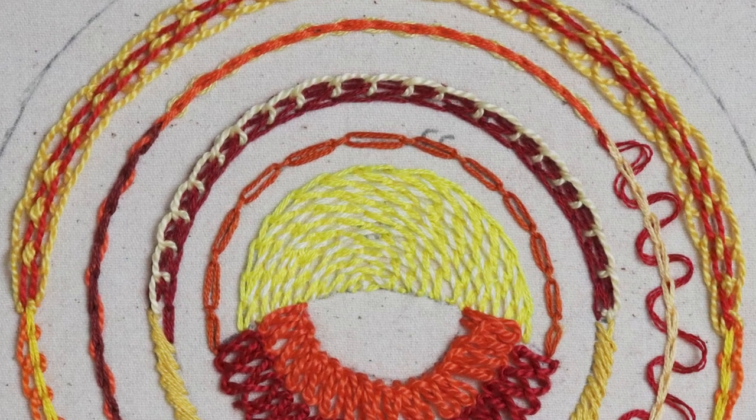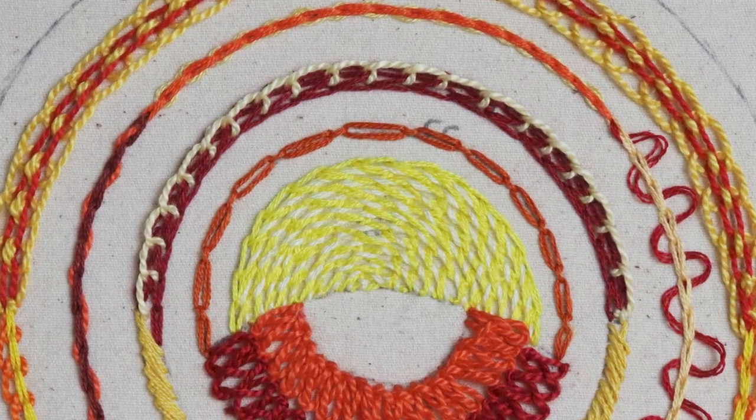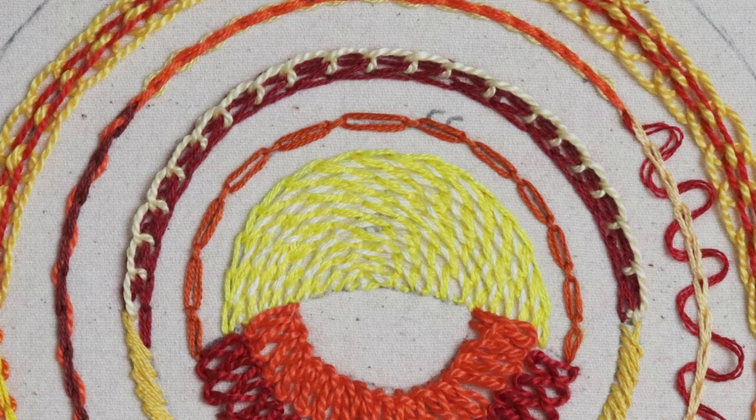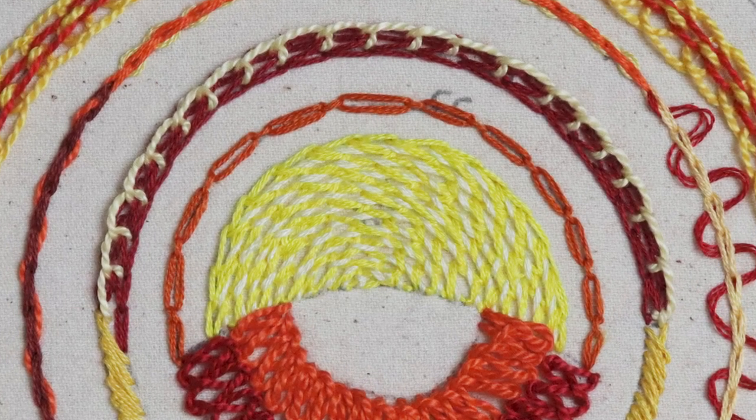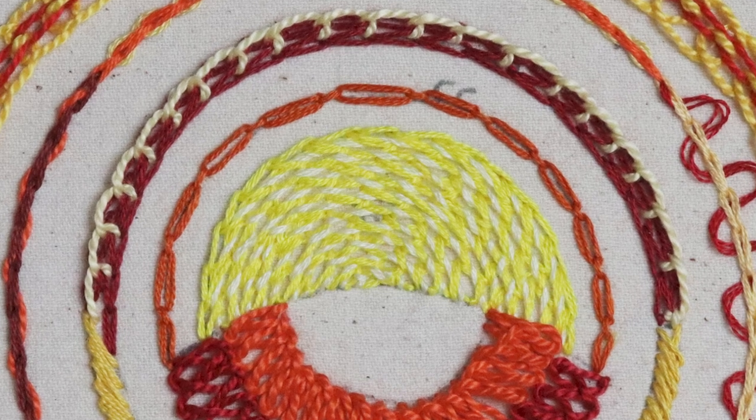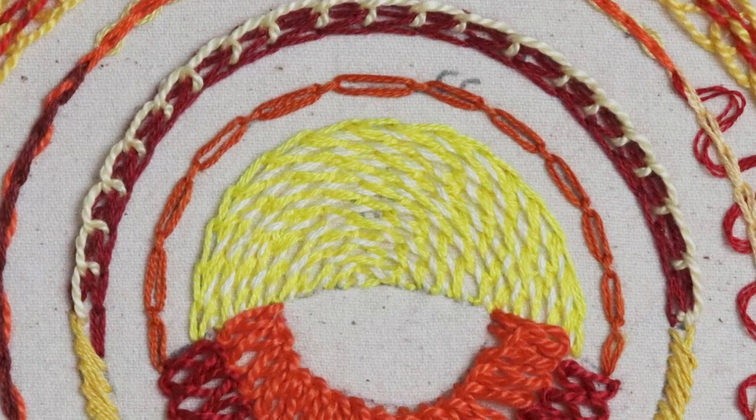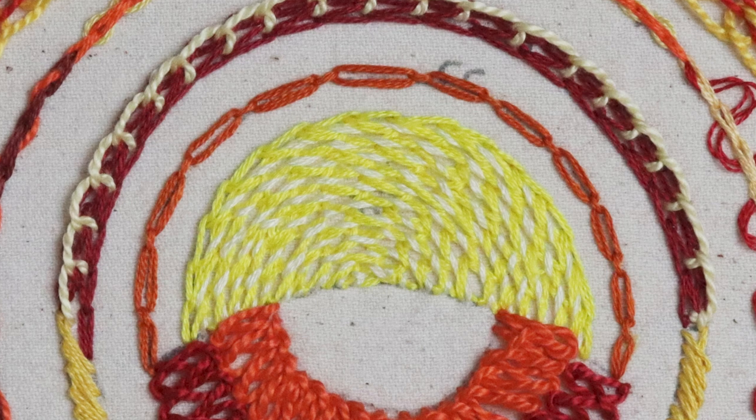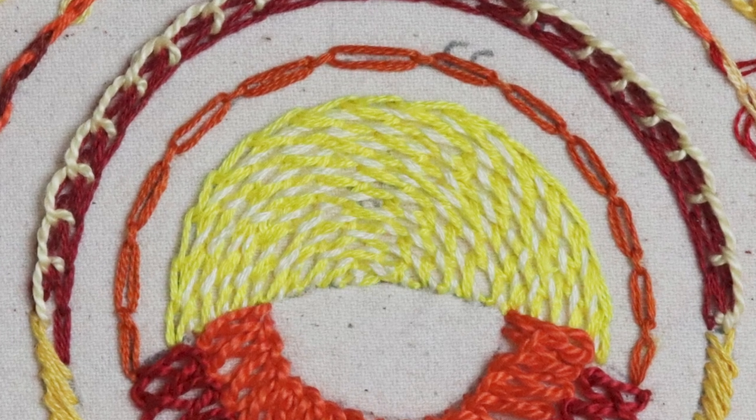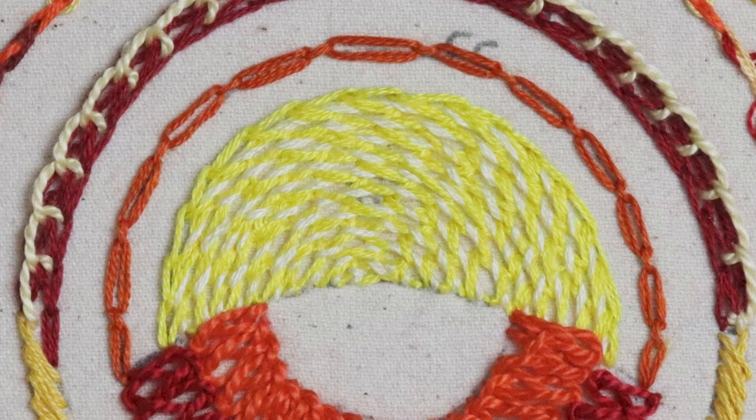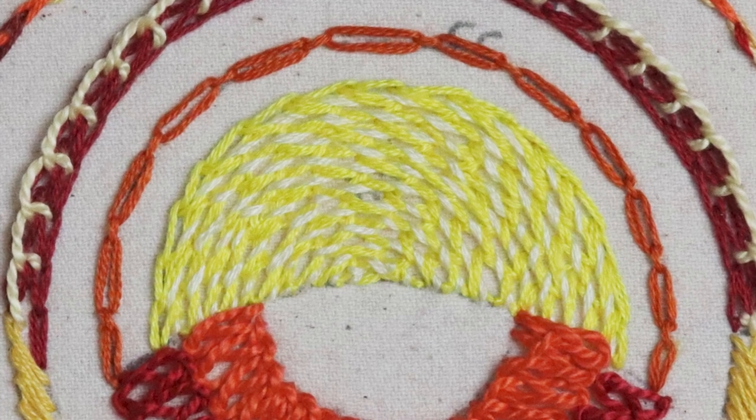So here we go, this is cable chain stitch. It is still very much chain stitch but it ends up having a very different look. It looks like cable chains, it's perfectly named for what it is. It has these really cool oval circles instead of that teardrop shape that we see in the chain stitch and it has a completely different way to sew it, and yet the basis is still the same technique.